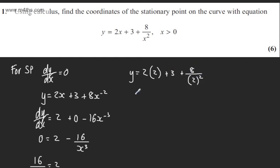So working this out, we'll have y equals 4 plus 3 plus 2, which is going to give me a total of 6 plus 3. We've got y equals 9. So the coordinates of a stationary point for 6 marks will be 2 comma 9.